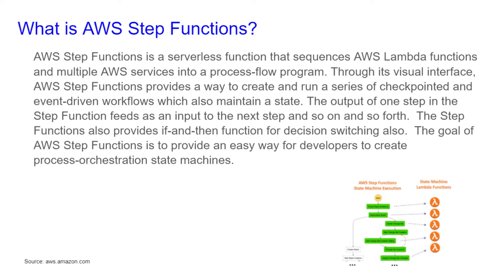AWS Step Functions is a serverless function that sequences AWS Lambda functions and multiple AWS services into a process flow program. Through its visual interface, AWS Step Functions provides a way to create and run a series of checkpointed and event-driven workflows which also maintain a state. The output of one step in the Step Function feeds as an input to the next step, and so on and so forth.